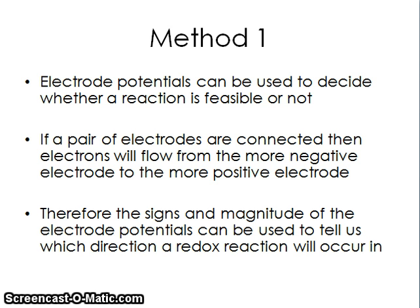In order to work out whether a reaction is feasible, there are three methods you can use. It doesn't matter which one you use — just find the one you're most comfortable with and makes the most sense, and make sure you use that. The first method is looking at the electrode potentials, and we can use them to decide whether a reaction is feasible or not. If a pair of electrodes are connected, electrons will always flow from the more negative electrode to the more positive electrode. Notice we say 'more negative to more positive' because sometimes both electrodes have positive values or both have negative values — electrons still go from the more negative to the more positive. By looking at the signs and magnitude of the electrode potentials, we can tell which direction a redox reaction is going to happen. The best way of doing this is to look at an example.